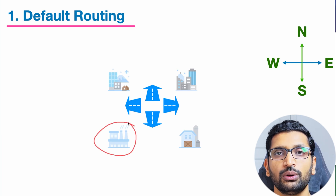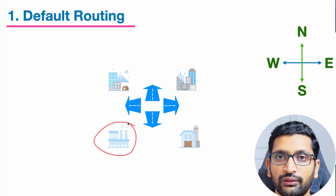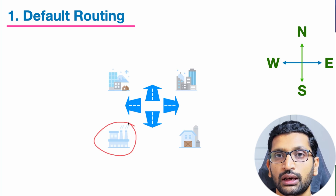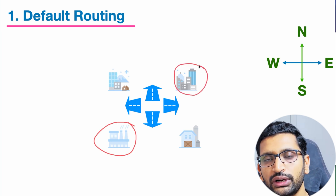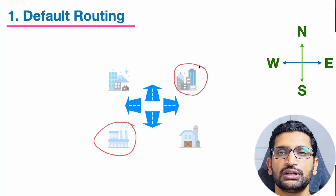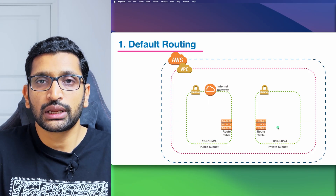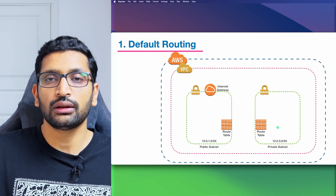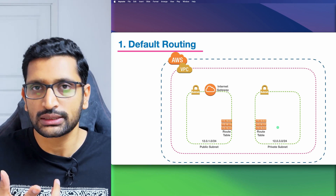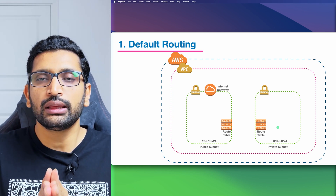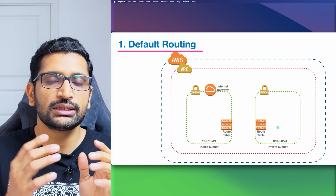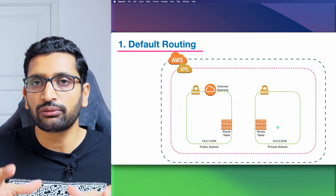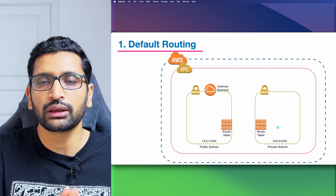If you follow the default route, you will be able to reach that particular destination. Similarly, if someone asks where the residential area is, you can say: follow the north street — that is the default street to reach the residential area where the apartments and houses are located. Now the question is: how do you implement default routing in a cloud service or on-premise data center? I'll be taking the example of AWS and Google Cloud.